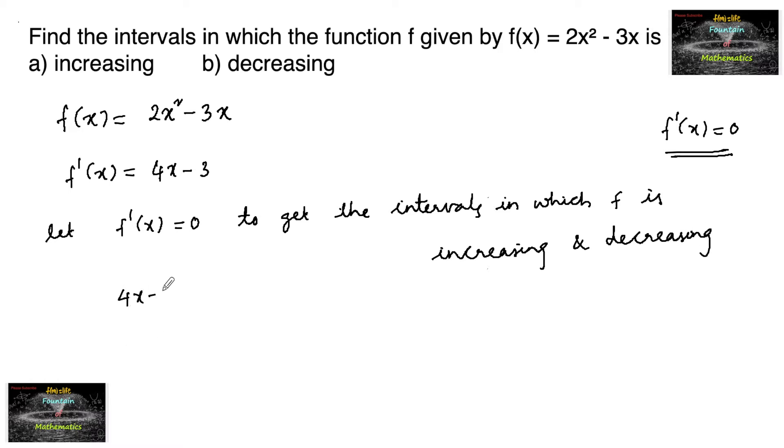So we have 4x - 3 = 0, which implies x = 3/4. So x = 3/4 will divide the number line into two parts. Let us mark here 3/4.